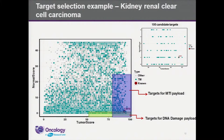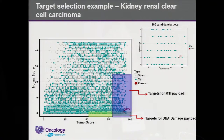The next example is kidney renal clear cell carcinoma. Again, this shows the distribution between normal score and tumor score. For DNA damage payload class, which requires very low normal expression but allows relaxed tumor expression levels, we can predict about 100 candidate targets, including the known target CD70, which uses a DNA damage-based payload.